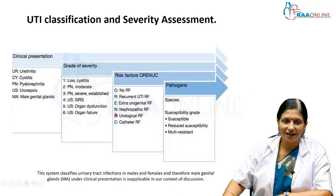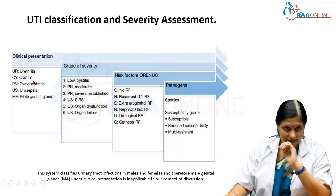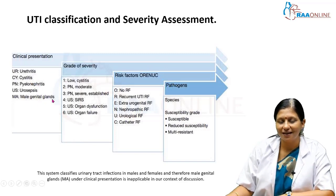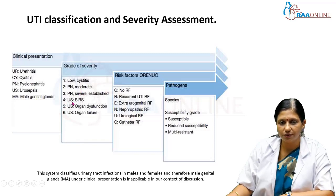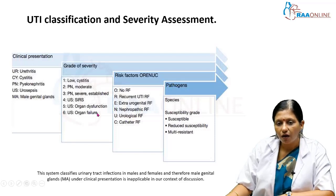Clinically, a patient can present with urethritis, cystitis, pyelonephritis, urosepsis, or involvement of the male genital glands. Among the grades of severity: Grade 1 is low-severity cystitis; Grade 2 is pyelonephritis of moderate degree; Grade 3 is pyelonephritis severe and established; Grade 4 is urosepsis with systemic inflammatory response syndrome (SIRS); Grade 5 is urosepsis with organ dysfunction; and Grade 6 is urosepsis with organ failure.